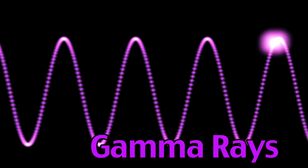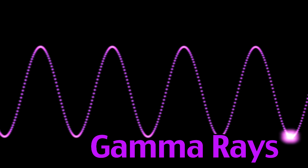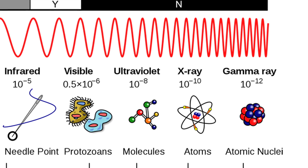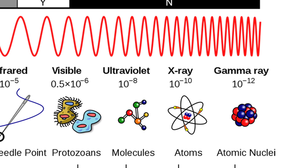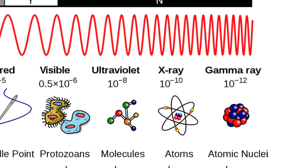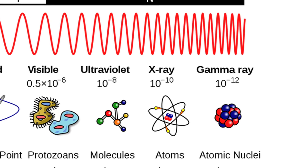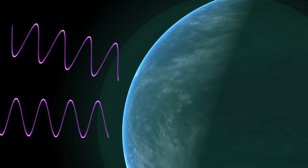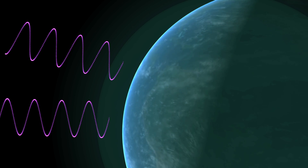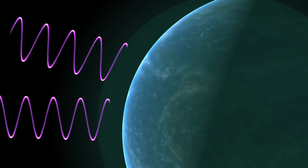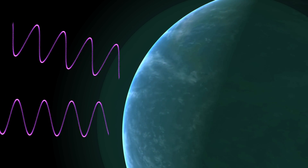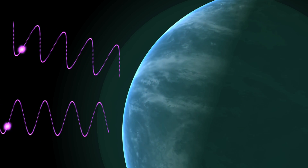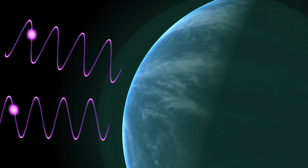The last type of radiation that we'll discuss is gamma rays. Gamma rays have the shortest wavelength and consequently the highest frequency on the electromagnetic spectrum. They are the most harmful of all types of radiation on the spectrum. However, fortunately for us, our atmosphere absorbs almost all gamma radiation.